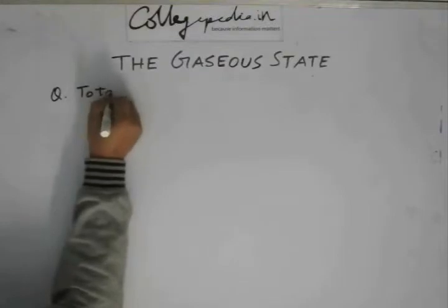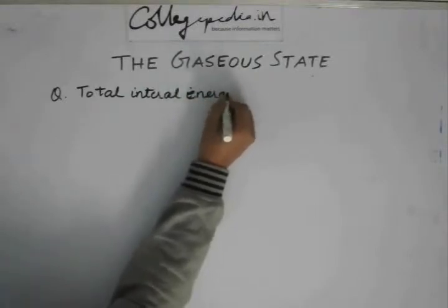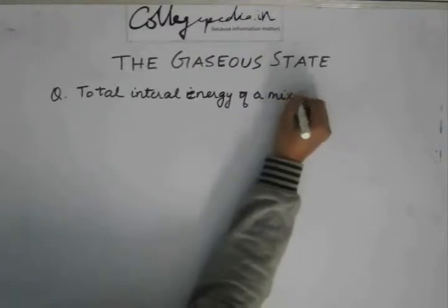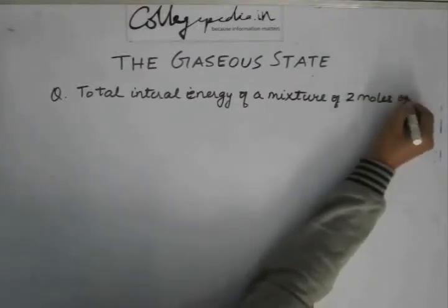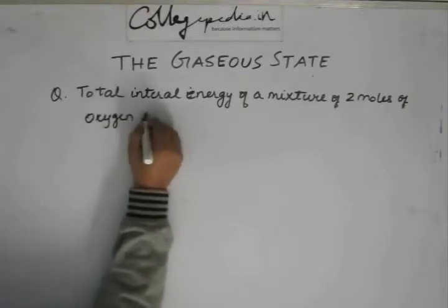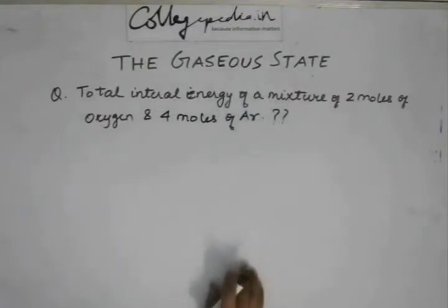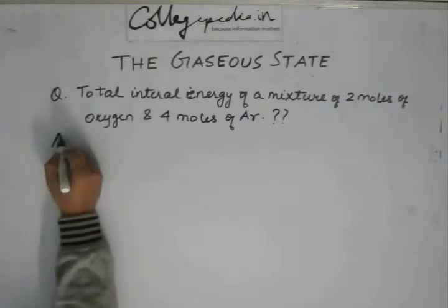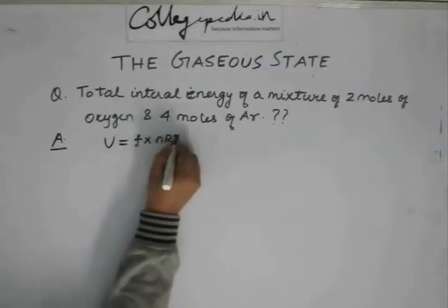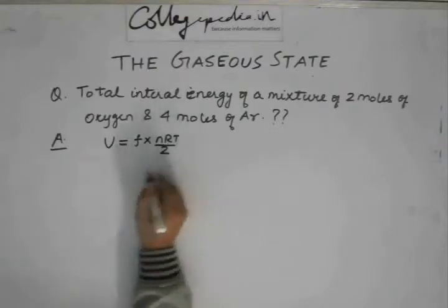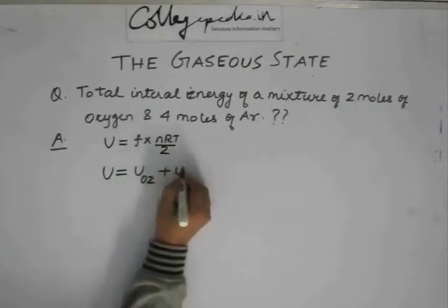We need to find the total internal energy of a mixture of 2 moles of oxygen and 4 moles of argon. Internal energy is the degrees of freedom multiplied with nRT/2 for any number of moles. The total internal energy of the mixture is going to be the internal energy of oxygen plus the internal energy of argon.